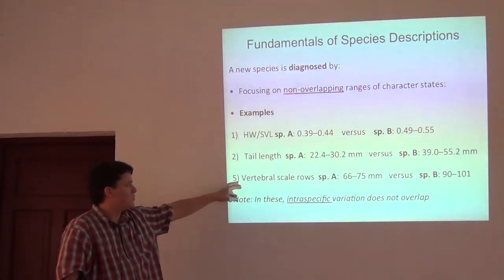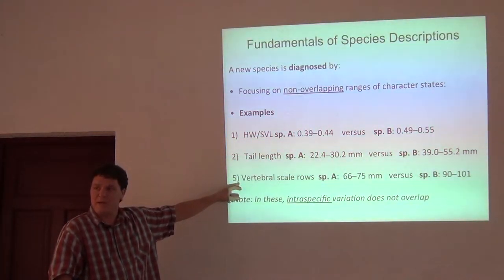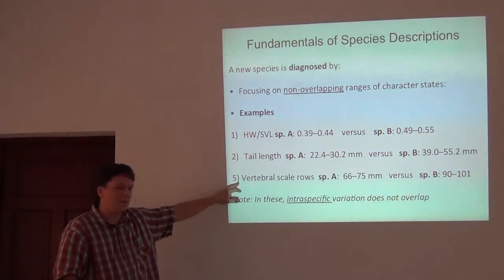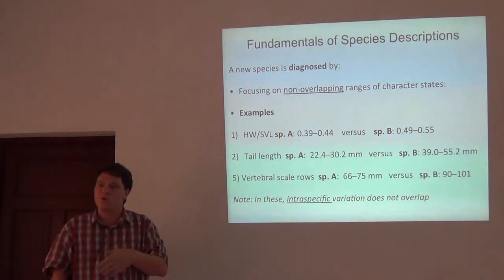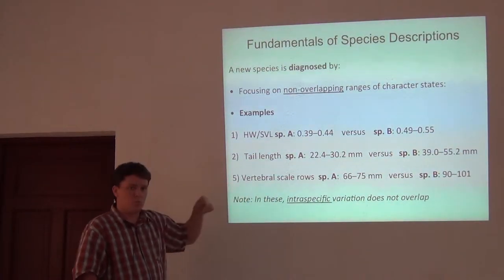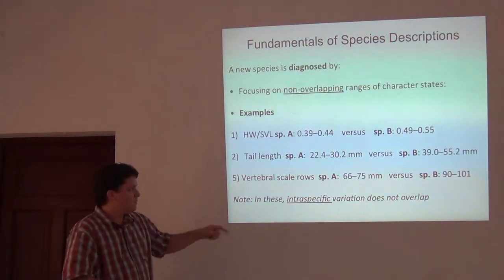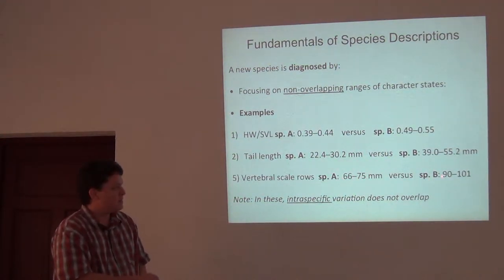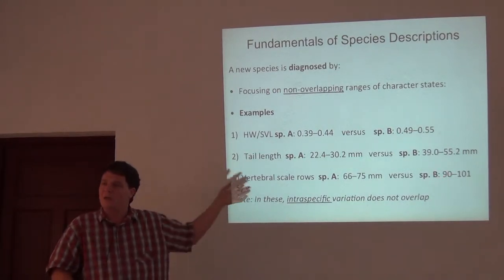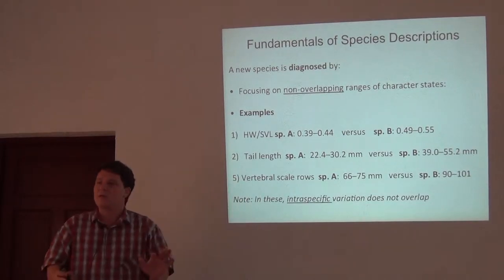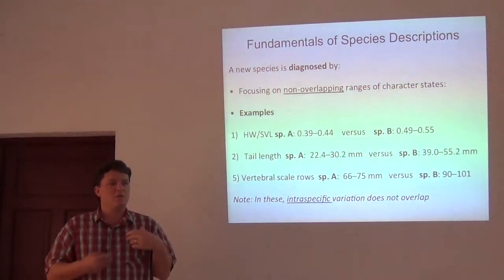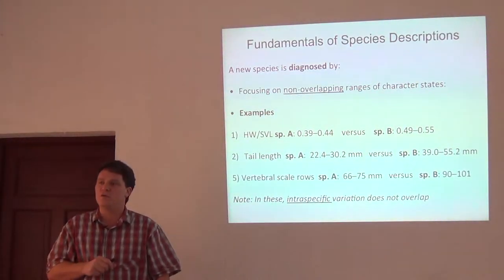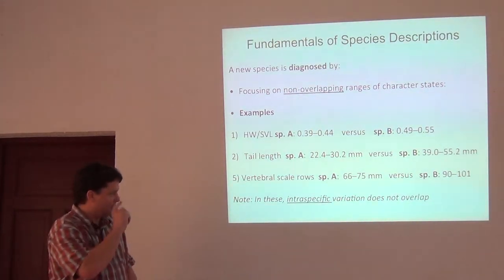Now talking about meristic data — scale counts using technical terms, but really thinking about things you can count as discrete quantities. Vertebral scale rows: when counting the scales down the back of a skink lizard, in species A you measure 10 of them and they range from 66 to 75, and in species B they range from 90 to 101. Again, those are non-overlapping character states. All three examples are exactly the type of characters we look for, and we try to pile up as many of these to provide evidence for diagnosability of a new species.